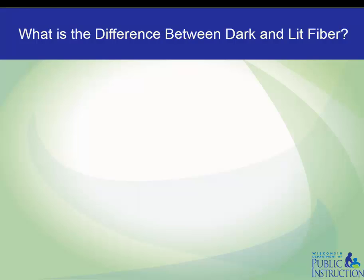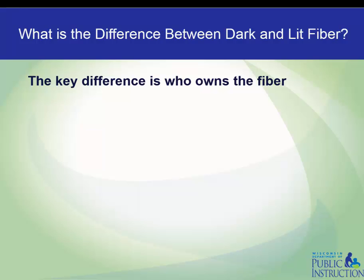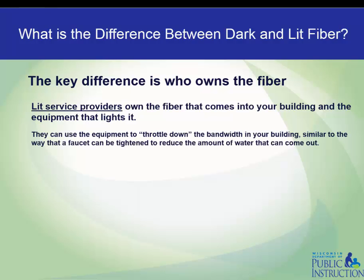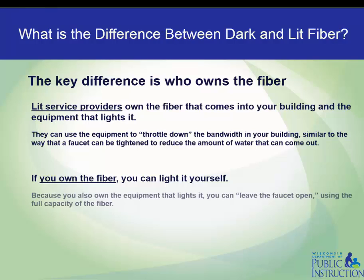What is the difference between dark and lit fiber? The key difference is who owns the fiber. Lit service providers own the fiber that comes into your building and the equipment that lights it. They can use the equipment to throttle down the bandwidth in your building, similar to the way a faucet can be tightened to reduce the amount of water that can come out. If you own the fiber, you can light it yourself, and because you also own the equipment that lights it, you can leave the faucet open, using the full capacity of the fiber. This is also true if you lease the fiber.